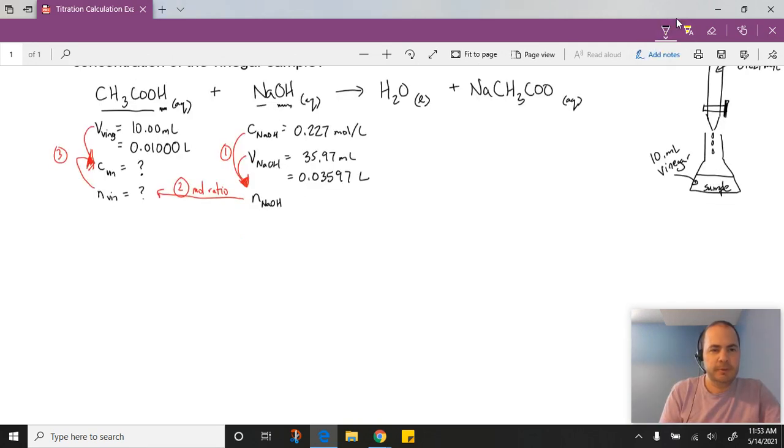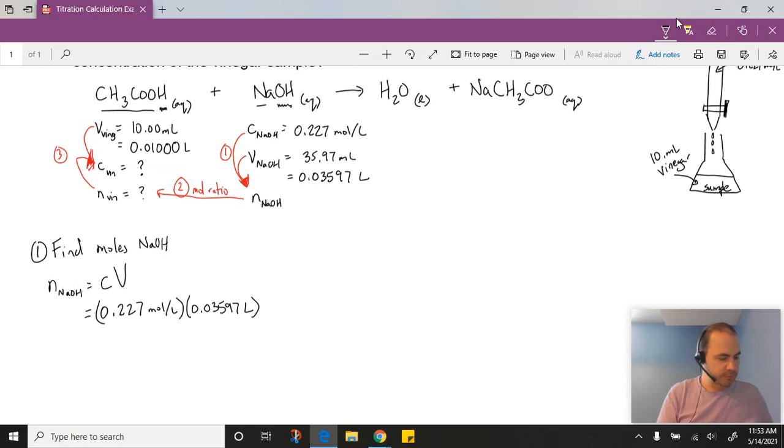Our next step, then, is to work through each of these different pieces to solve our problem. We said the first thing was to find moles, so let's find moles of NaOH. We're going to take moles of NaOH equals the concentration times the volume. So 0.227 moles per liter, and we're going to multiply that by our volume, which was 0.03597 liters. So when we do that, we'll get a number of moles of 0.00816519 moles. That's our moles of sodium hydroxide.